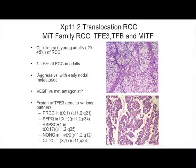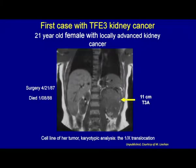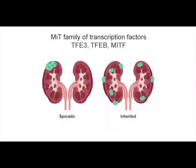The Xp11.2 translocation carcinoma, part of the microphthalmia transcription family of cancers — the TFE3 tumors — was first discovered in the 1980s, primarily as a tumor of children, rarely seen in young adults. The first case was described by Linehan and his group in a 21-year-old college student in which they performed the genetic studies. It was the first case of a TFE3 kidney cancer translocation. It is a different family of tumors with a different history, and perhaps they do respond to sunitinib somewhat. These tumors can be inherited or sporadic.